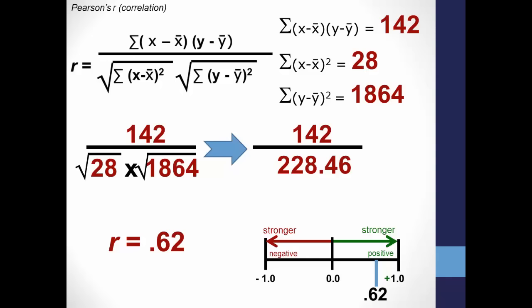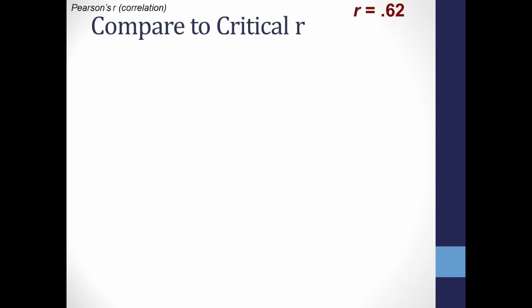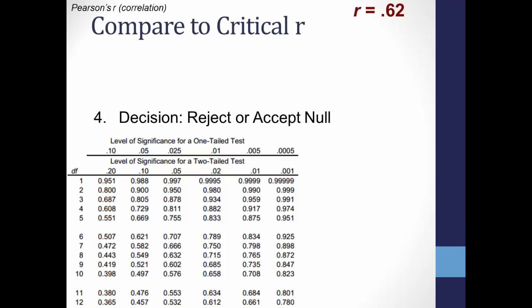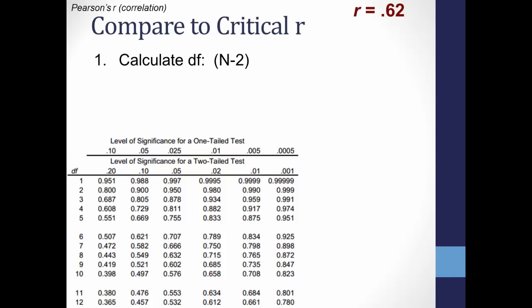Now we have to compare our calculated r of .62 to determine whether we should accept or reject the null hypothesis, and for that we'll need our critical value table for Pearson's r. First, we calculate degrees of freedom, which is n minus 2. We had 7 scores on the x variable and 7 on the y variable, for a total of 14. 14 minus 2 equals 12 degrees of freedom — which refers to how many ways our data could be combined and still produce the same value for a statistic.